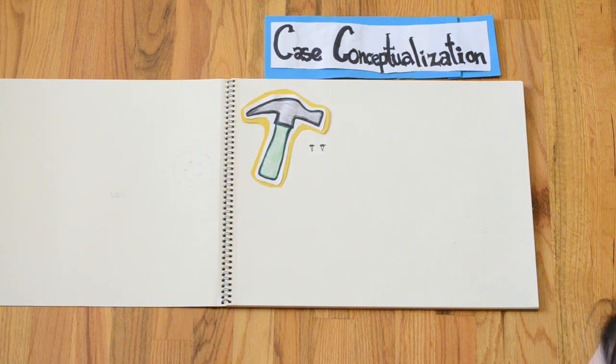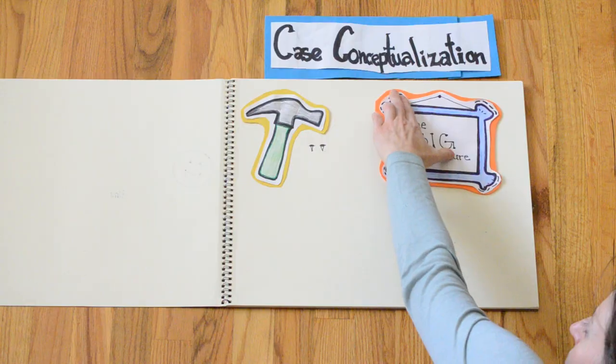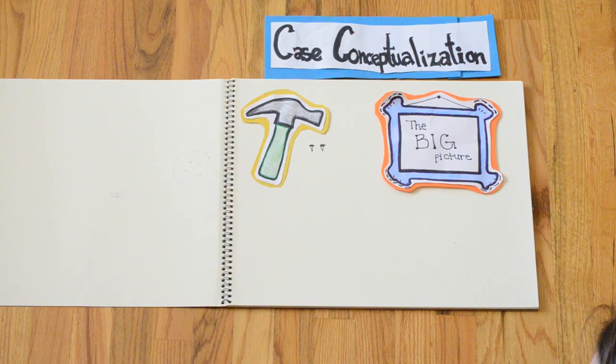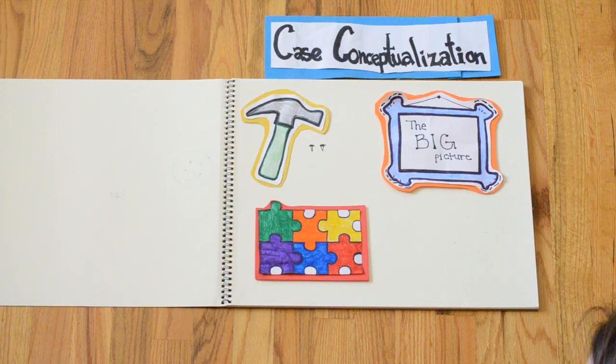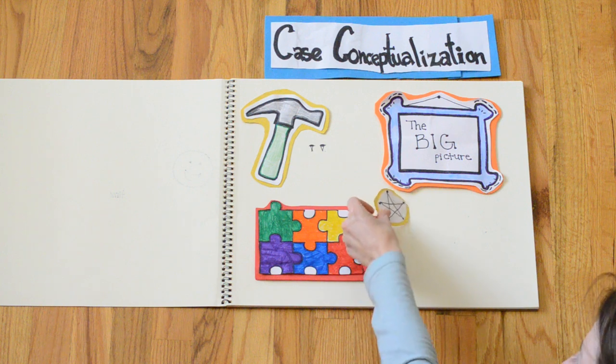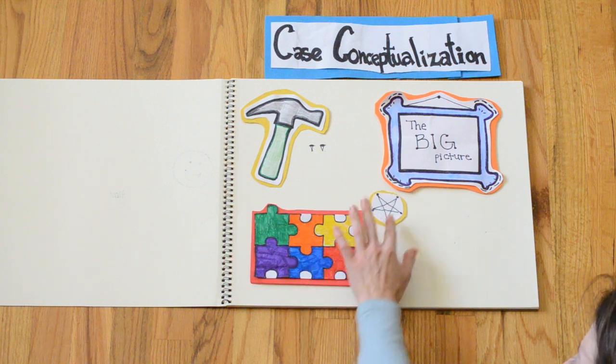One reason why this is true is because case conceptualization allows us to see the big picture. This helps us to understand our clients in context, just like putting together a puzzle. And it also helps us to organize our ideas so that we can make more connections and associations than we would be able to otherwise.